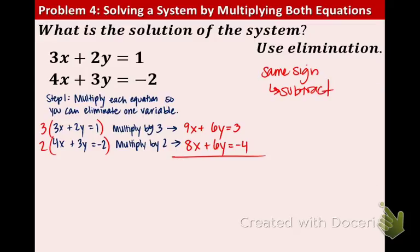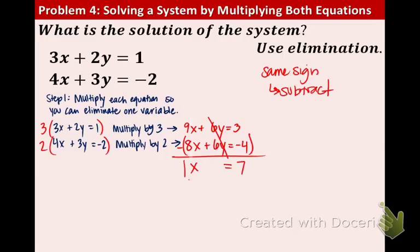So let's subtract now. And remember, we're subtracting everything. So 9x minus 8x is 1x. And 6y minus 6y is 0. Gone. And 3 minus a negative 4 is positive 7. So x equals 7.